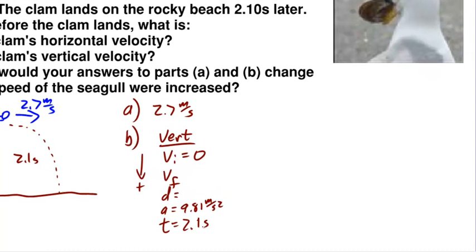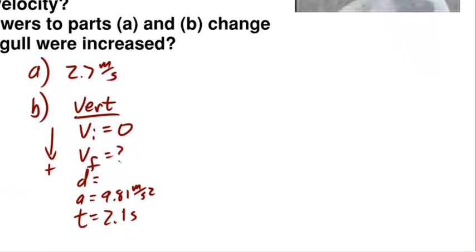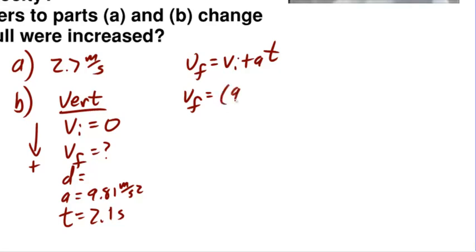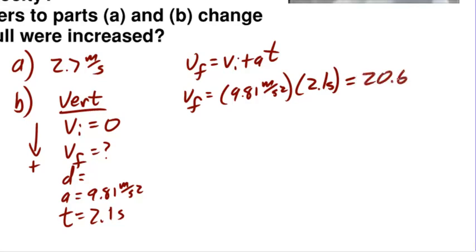Now we're looking for Vf. We use the formula Vf equals Vi plus A·T. Substituting in: Vf equals 0 plus 9.81 meters per second squared times 2.1 seconds, giving a final vertical velocity of about 20.6 meters per second.